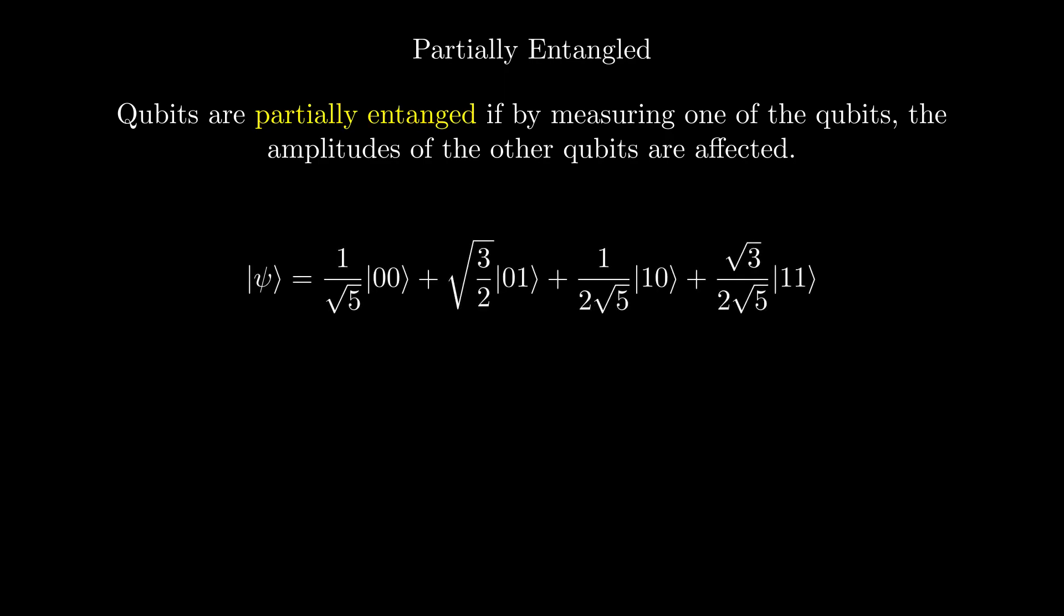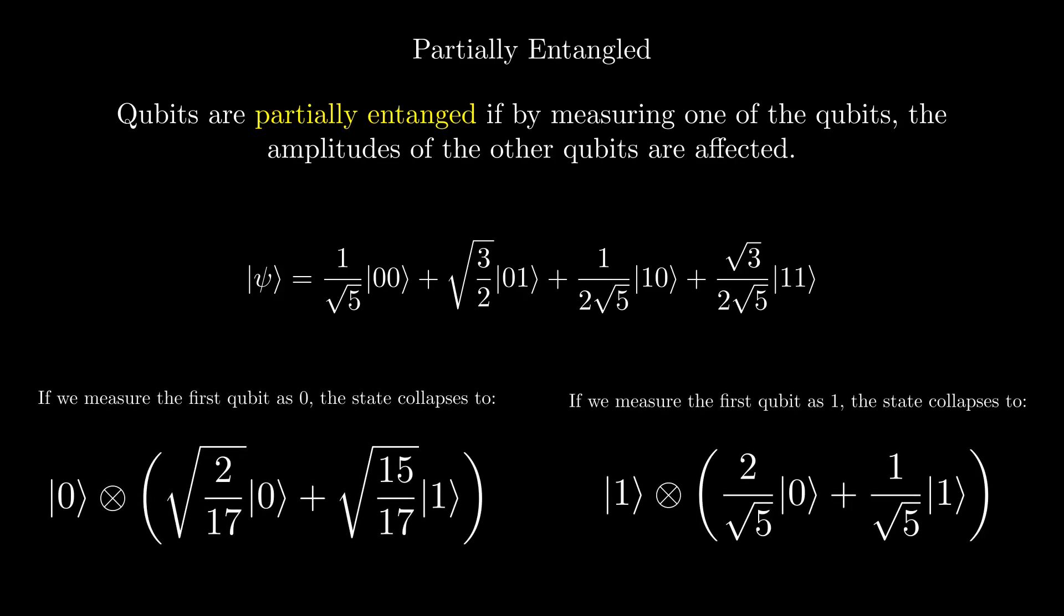if we measure the first qubit as zero, the state collapses to this, but if we measure the first qubit as a one, then it collapses to this state. As you can see, the two states have different probabilities of measuring zero or one, so this state is partially entangled since measuring one qubit affects the probabilities of the other.